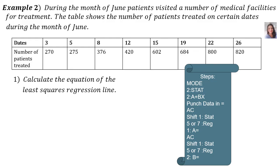Let's do another example. During the month of June, patients visited a number of medical facilities for treatment. The table shows the number of patients treated on certain days during the month of June. Then there you find the dates, 3, 5, 8, etc. And then the number of patients treated, 270, 275, etc. Question 1. Calculate the equation of the least squares regression line. Now, let's do it together. We are looking for the equation in the form y equals a plus bx.